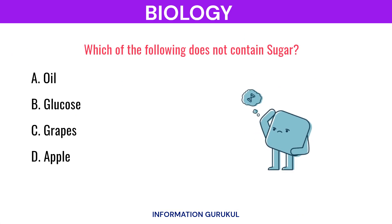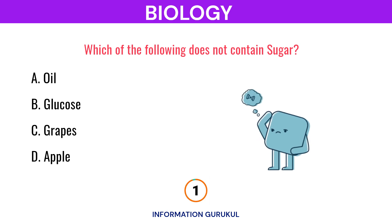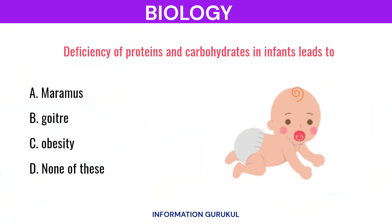Which of the following does not contain sugar? Oil. Deficiency of proteins and carbohydrates in infants leads to Marasmus.